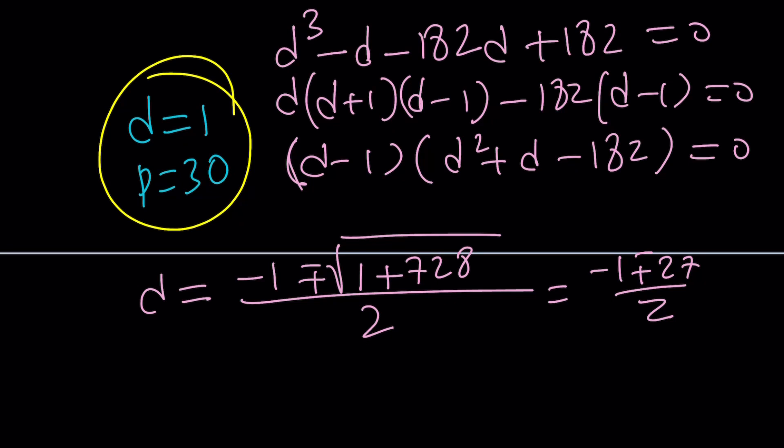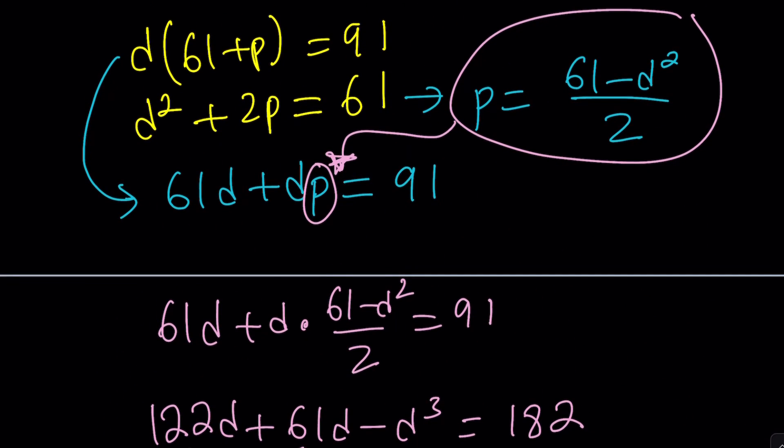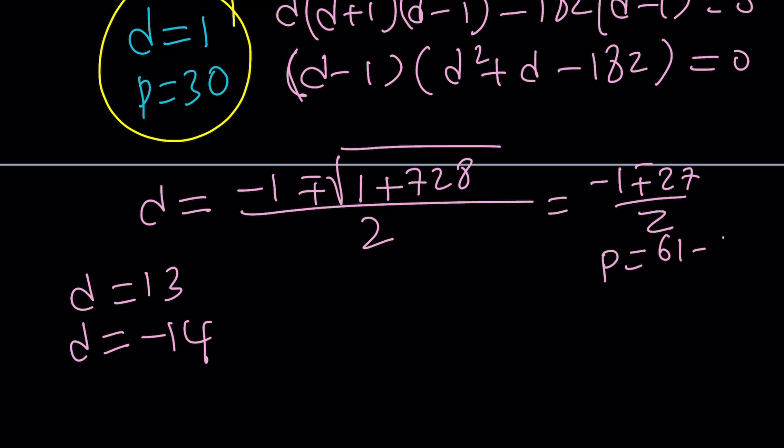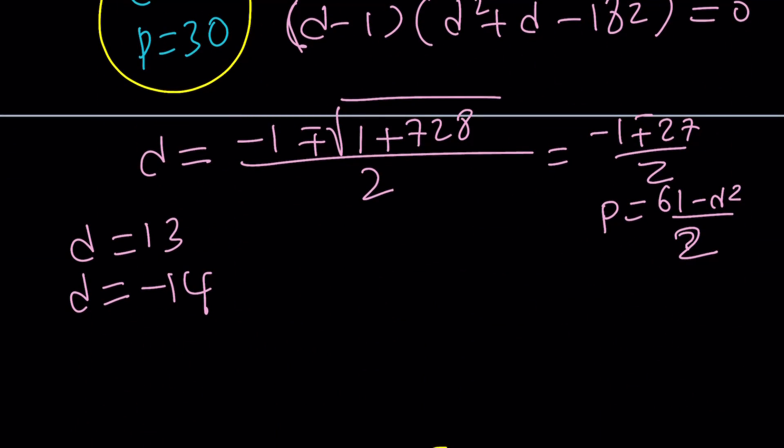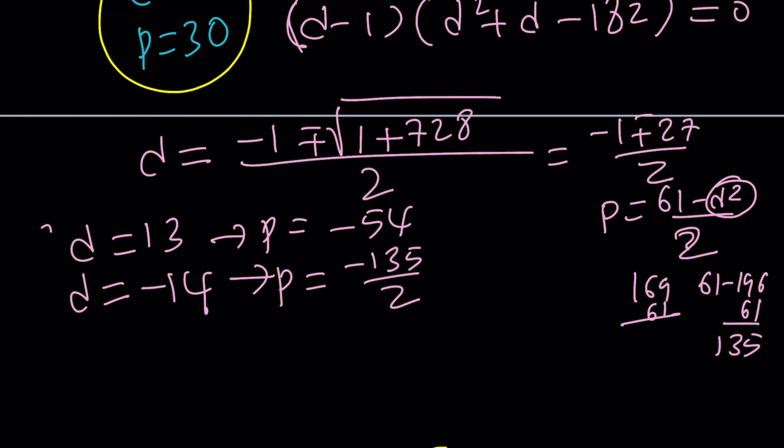Along with p, of course, p is not going to be 30 in this case. You kind of have to consult the formula. p equals 61 minus d squared over 2. Now if you plug in 13, you're going to get 169. And if you subtract it, 169 minus 61 is going to be 108. But it's going to be negative, negative 54. So p is going to be negative 54 from here. With d equals negative 14, the product is going to be 61 minus 196. And 196 minus 61 is going to be 135. But it's going to be negative 135. And that's going to be divided by 2, of course. That's going to be a fraction. Not good. Anyways, you get the idea. We've got other pairs.